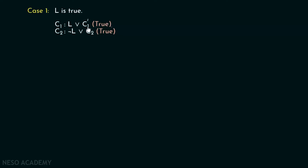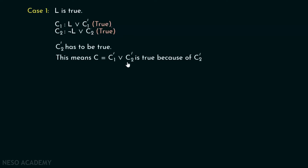If L is true, then it doesn't matter what C̄1 is — this disjunction will always be true. For the clause ¬L or C̄2, since ¬L is false, C̄2 has to be true in order to make this clause true. This means C, which equals C̄1 or C̄2, is true because of C̄2. Since C̄2 is true, C̄1 or C̄2 must be true, because if any one of them is true, the whole clause is true.